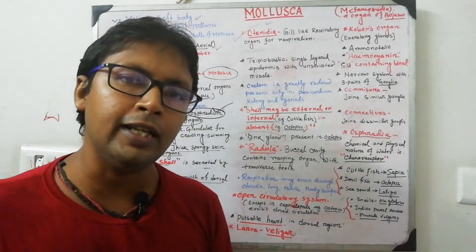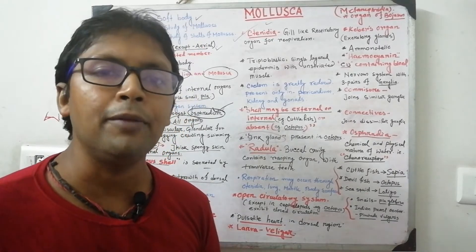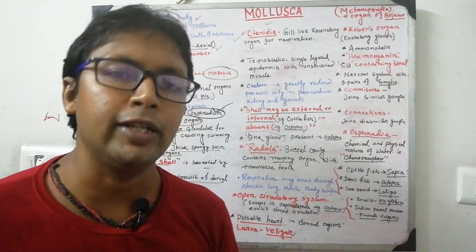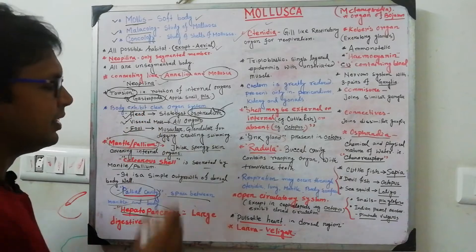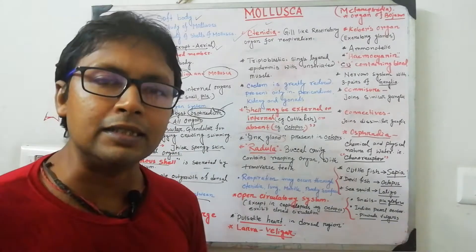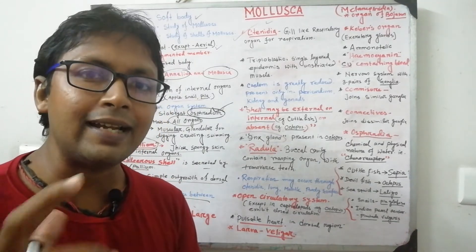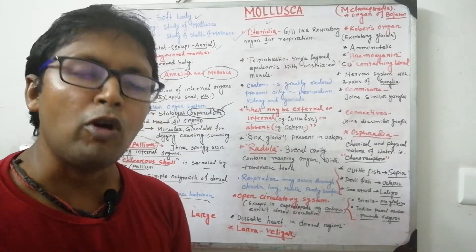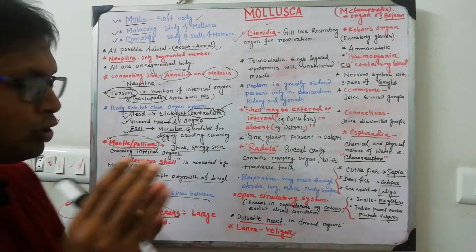The statocyst, as mentioned in previous phyla, is involved in osmoregulation. The visceral mass covers all the organs. The foot region is very important — it is both muscular and glandular, facilitating digging, crawling, and movement from one place to another.